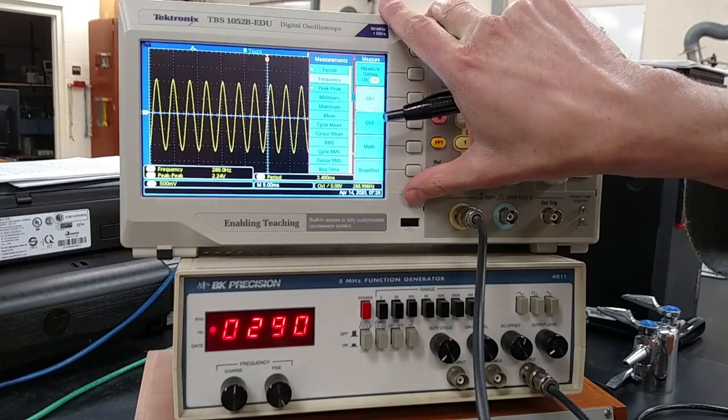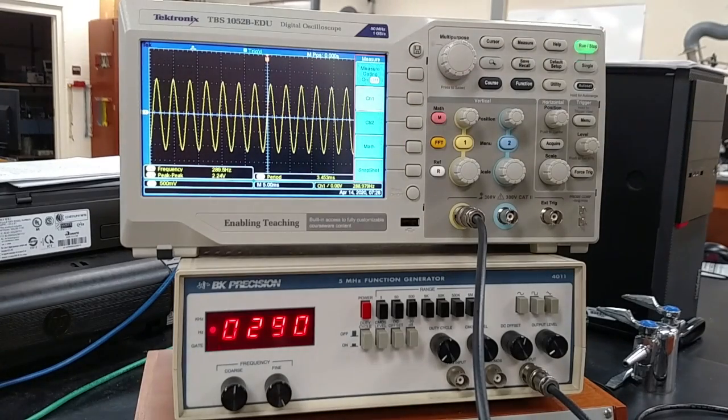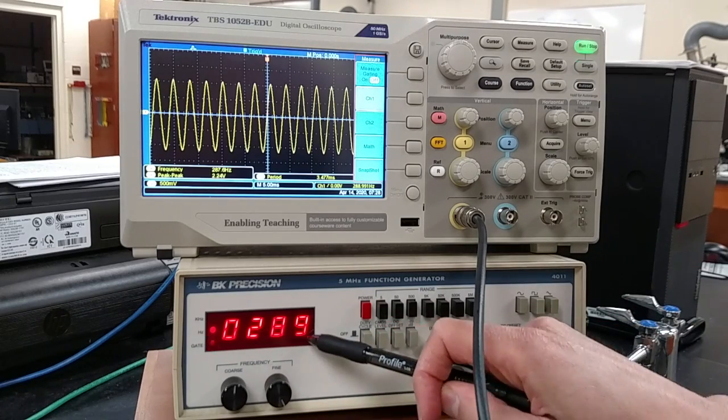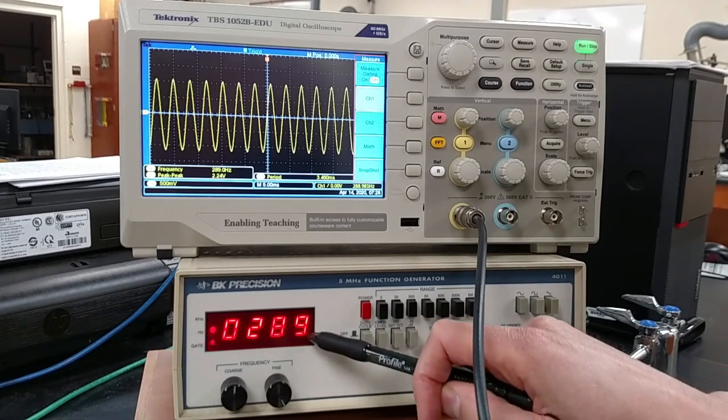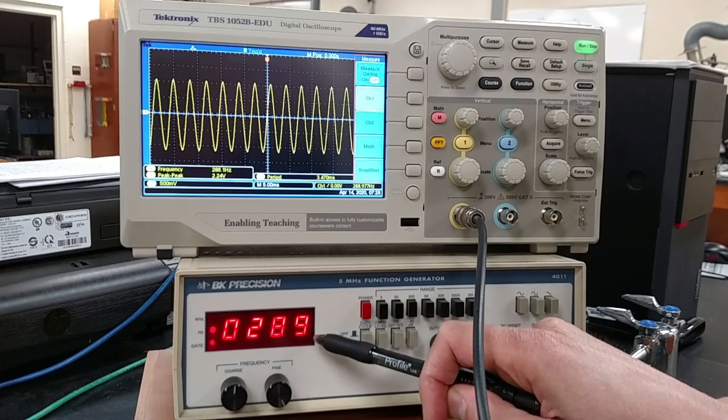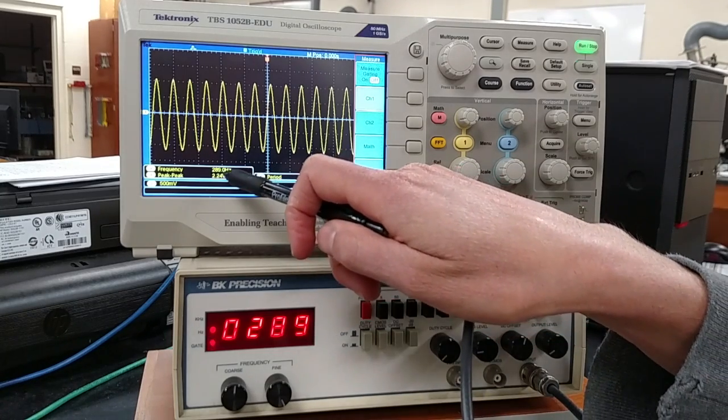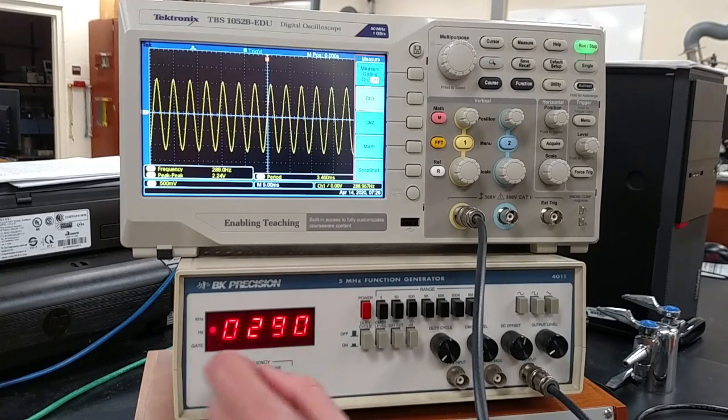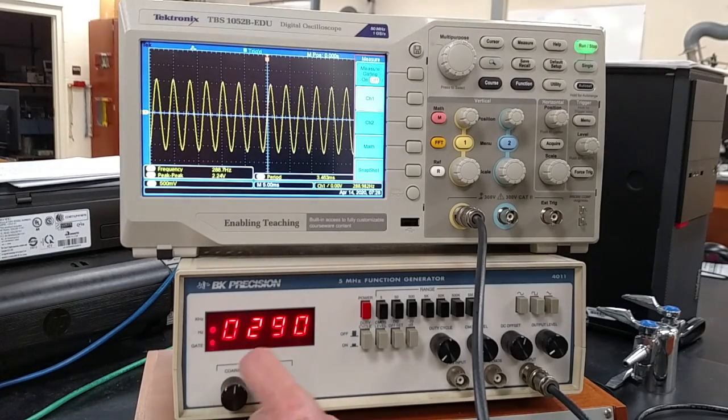One should be the inverse of the other. So we see that for the value of 289 according to the precision function generator, we get the same measurement between 288 to 289 hertz in the measurement with the scope.